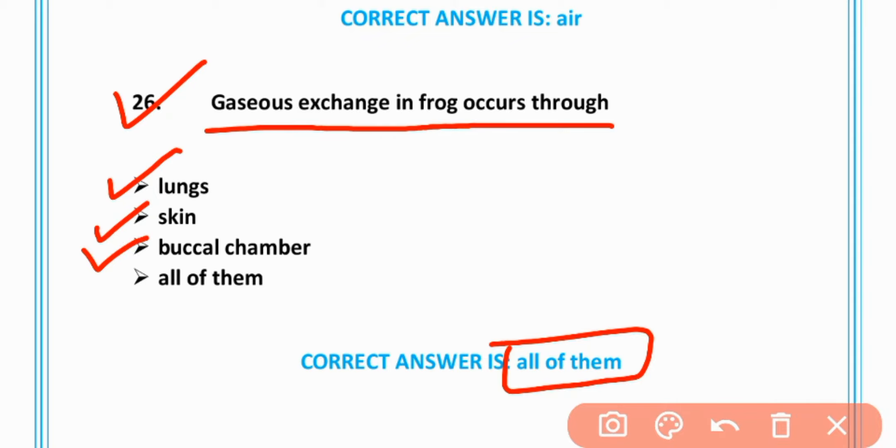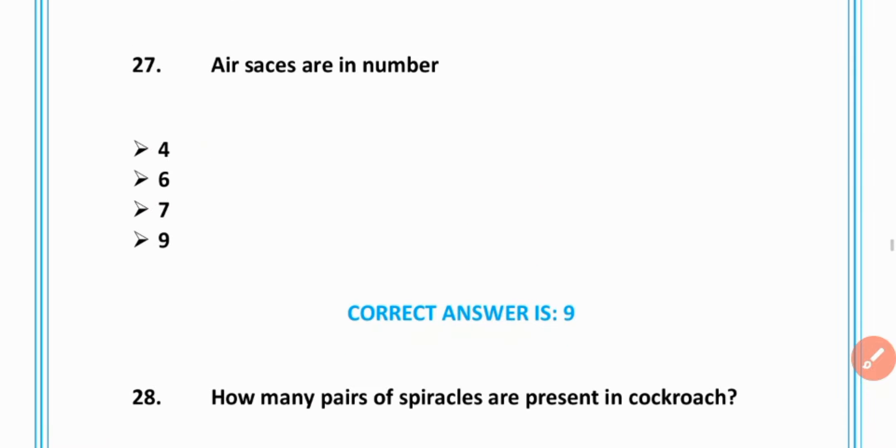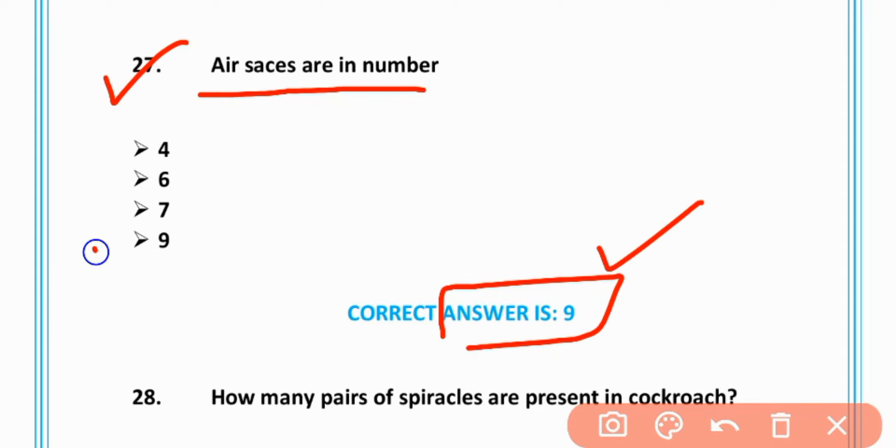MCQ number 27: Air sacs are in numbers? 9, option D is correct.